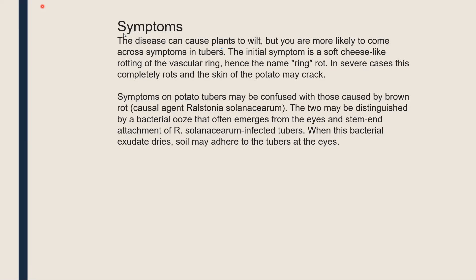Sometimes potato ring rot can be confused with potato brown rot, whose causal agent is Ralstonia solanacearum. The two may be distinguished by a bacterial ooze that often emerges from the eyes and stem of Ralstonia-infected tubers, while ring rot bacteria and soil may adhere to the tuber at the eyes.